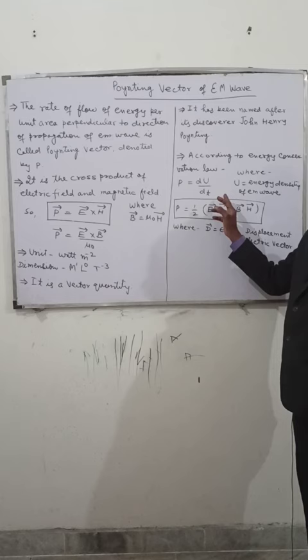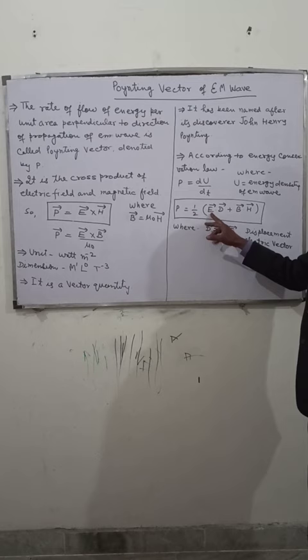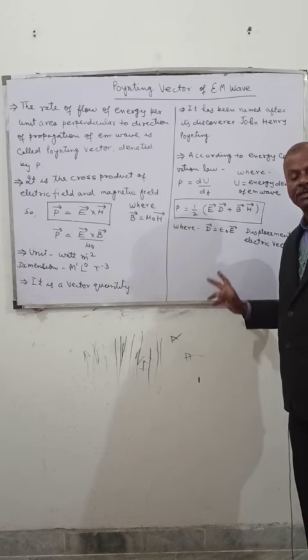So this is equal to half E into D plus B into H. D equals epsilon naught E, the displacement electric vector.